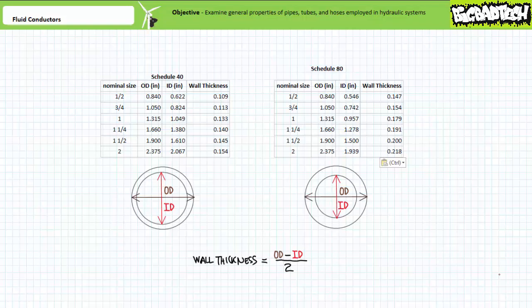In summary, pipes are strong but inflexible and cannot be bent. Any deviation in course with a pipe outside of a straight line necessitates the use of a fitting.